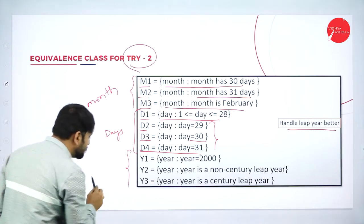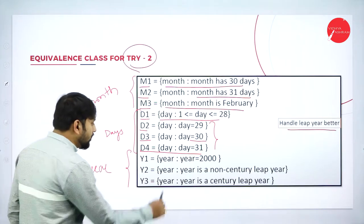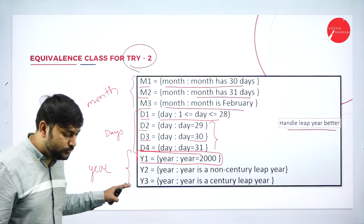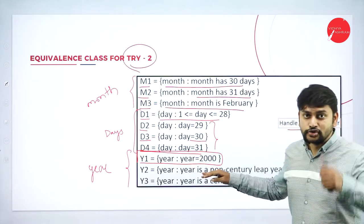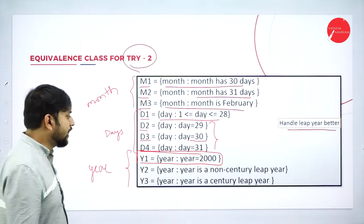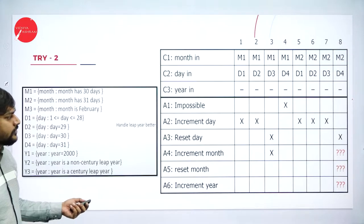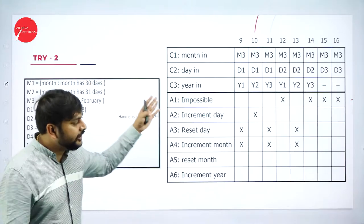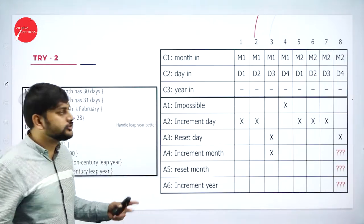I also have conditions for the year. The key difference from Try 1 to Try 2 is that I did not previously have the year condition — specifically 'year equals 2000.' We have added handling for century years here, which was not in Try 1. We have 16 rules total, divided into two parts: eight rules in the first part and eight rules in the second part.